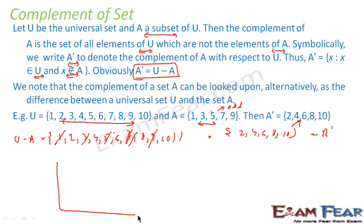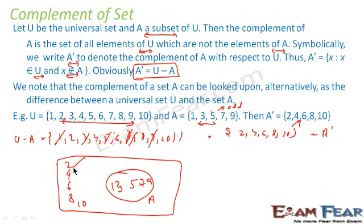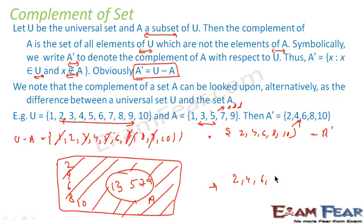We can also solve this using a Venn diagram. Create one circle for A with elements 1, 3, 5, 7, 9. Since the universal set has 1 to 10, write the remaining elements 2, 4, 6, 8, 10 outside the circle but inside the universal set box. A complement is everything outside of A in the box — that is {2, 4, 6, 8, 10}. We get the same answer using both methods.